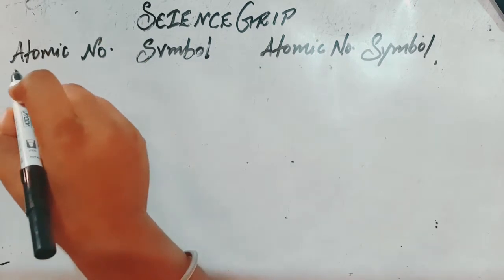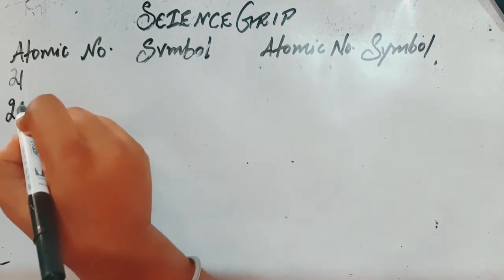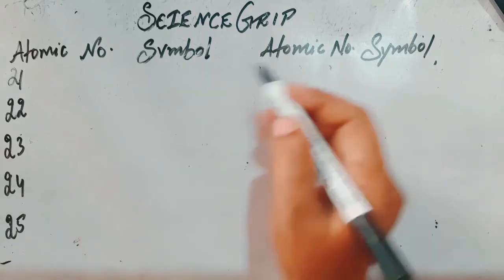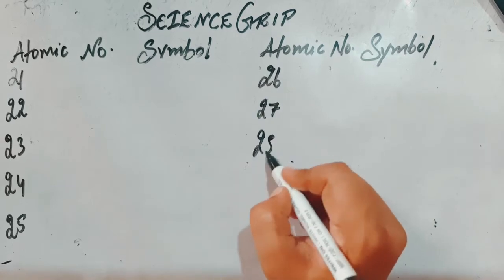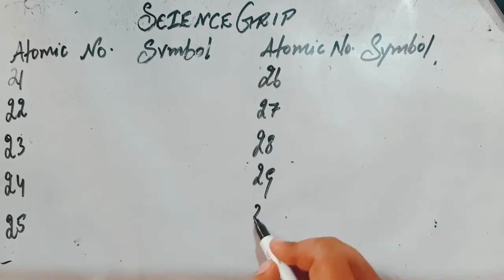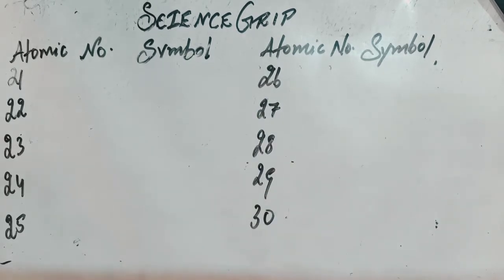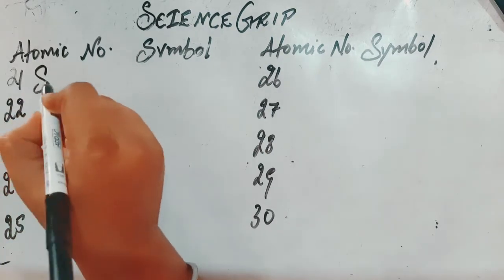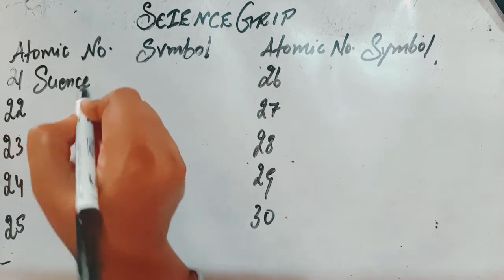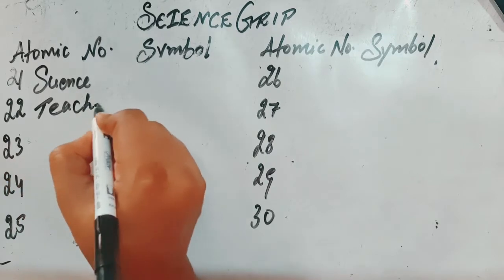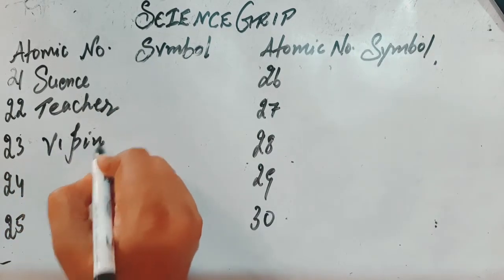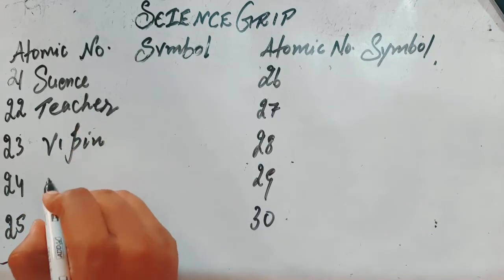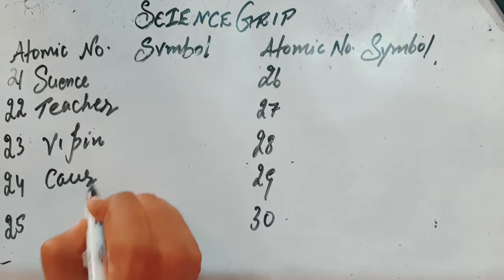The atomic numbers are 21, 22, 23, 24, 25, 26, 27, 28, 29, and 30. The single sentence to remember them is: 'Science teacher weapon car ma'am' — science, science teacher, science teacher weapon, weapon is the name of the teacher.